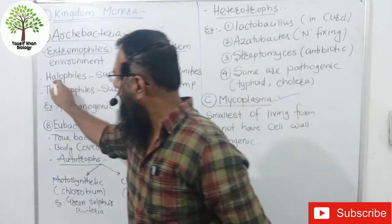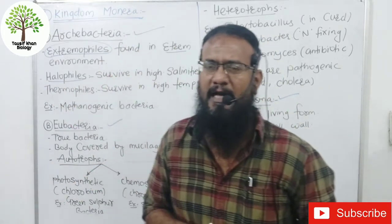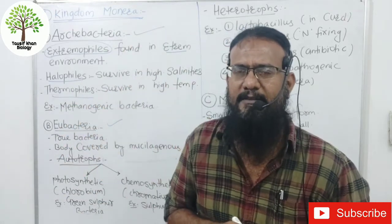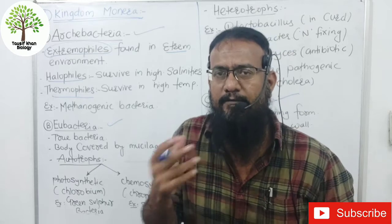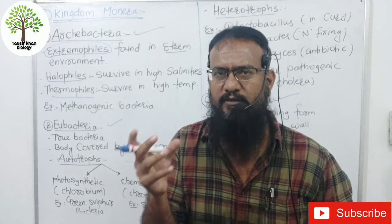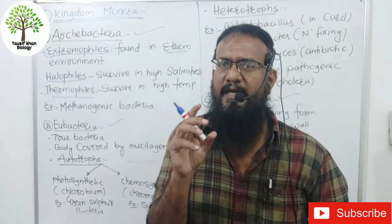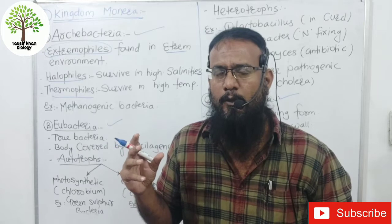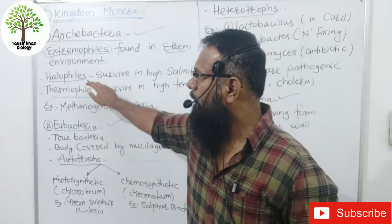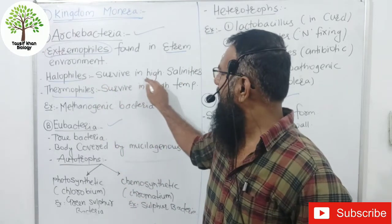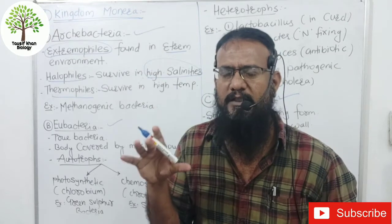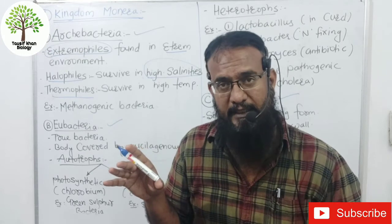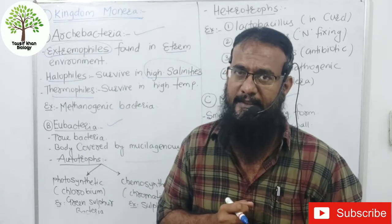There are examples such as halophiles and thermophiles. The suffix '-phile' means loving or affinity. Halophiles survive in high salinity — areas with very high salt concentration where most bacteria cannot survive, but halophiles can remain alive.